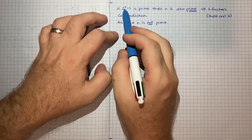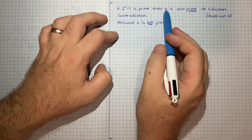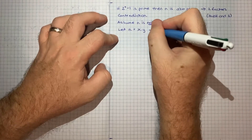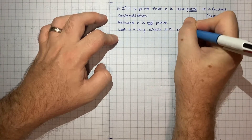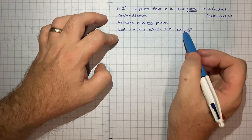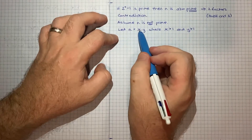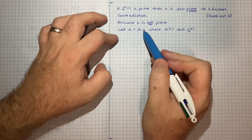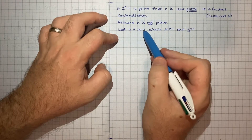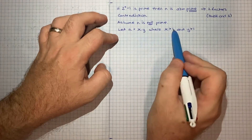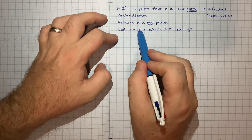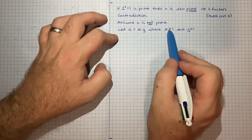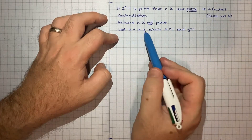Let's see what happens if we say 2 to the n minus 1 is prime but the integer n is not prime. What that would mean is we can let n equal x times y, where x is greater than 1 and y is greater than 1. We don't want either of them to be 1, because then n would just be the number itself. So x and y are factors of n, and neither of those two numbers are 1 or n itself — that's how we say n is not prime.